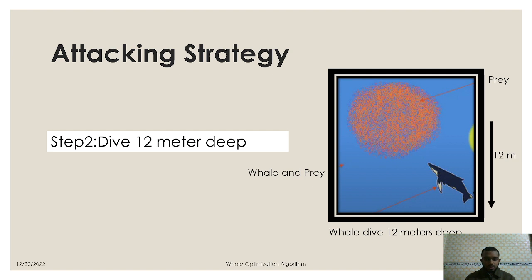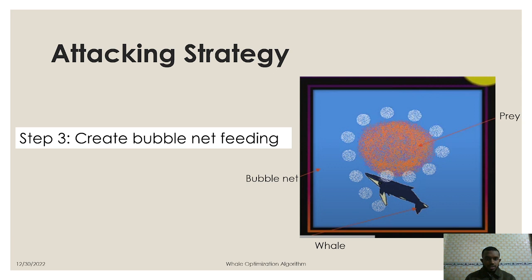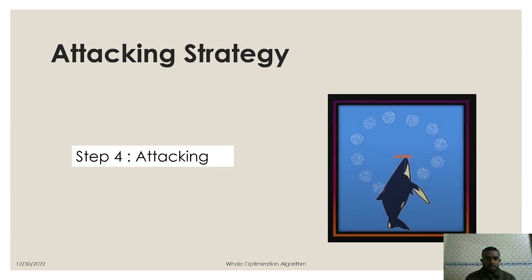After diving 12 meters deep from the prey he creates a bubble net around the prey and this process is called bubble net feeding. Next the final step is attacking the prey. So this was the complete attacking strategy of Humpback whale and on the basis of this strategy our whale optimization algorithm works.